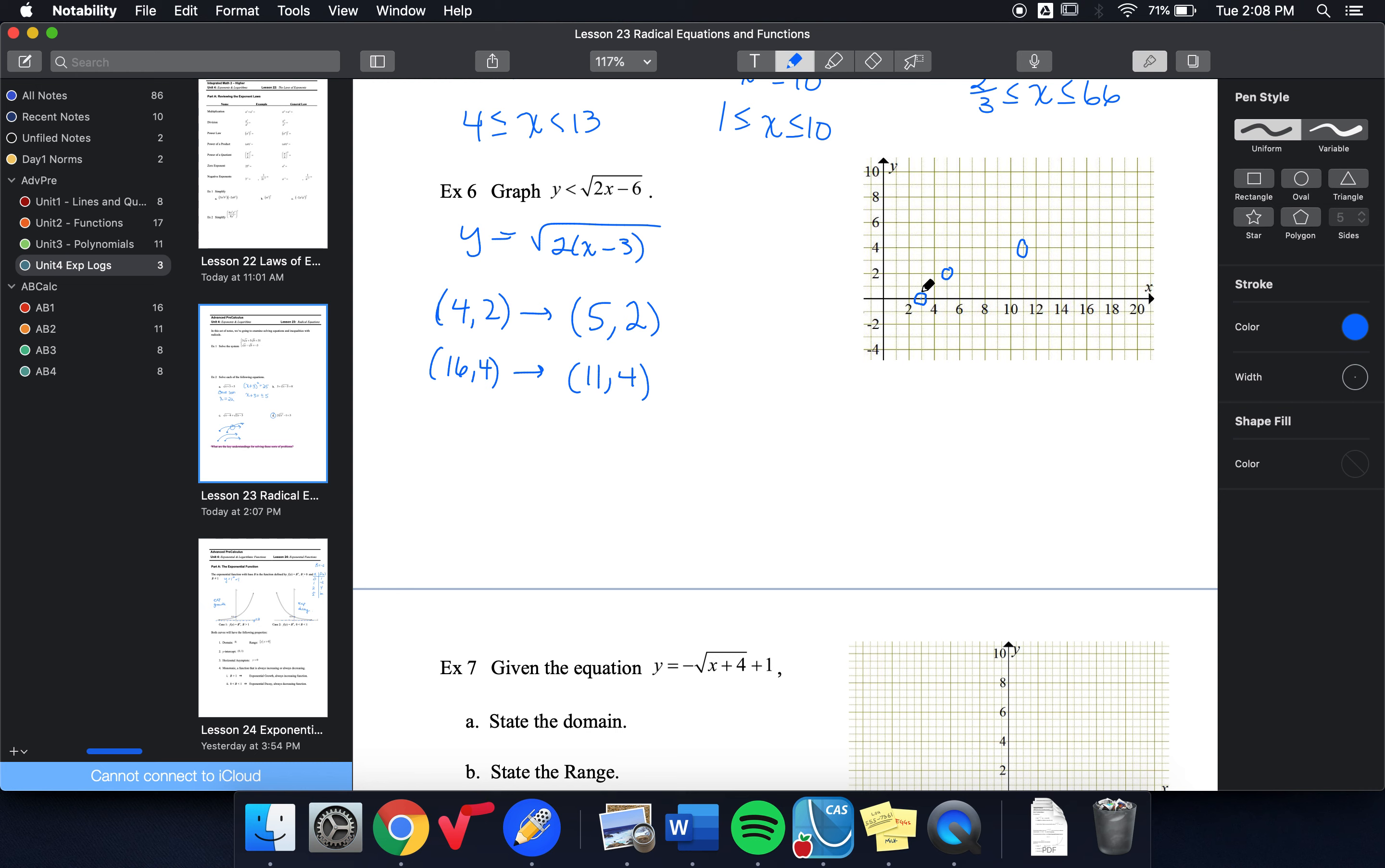I'm going to go ahead and create my square root graph with a dashed line. And again, I'm doing a dashed line, because I know a solid line would imply equal to, and I don't want equal to, I want less than.